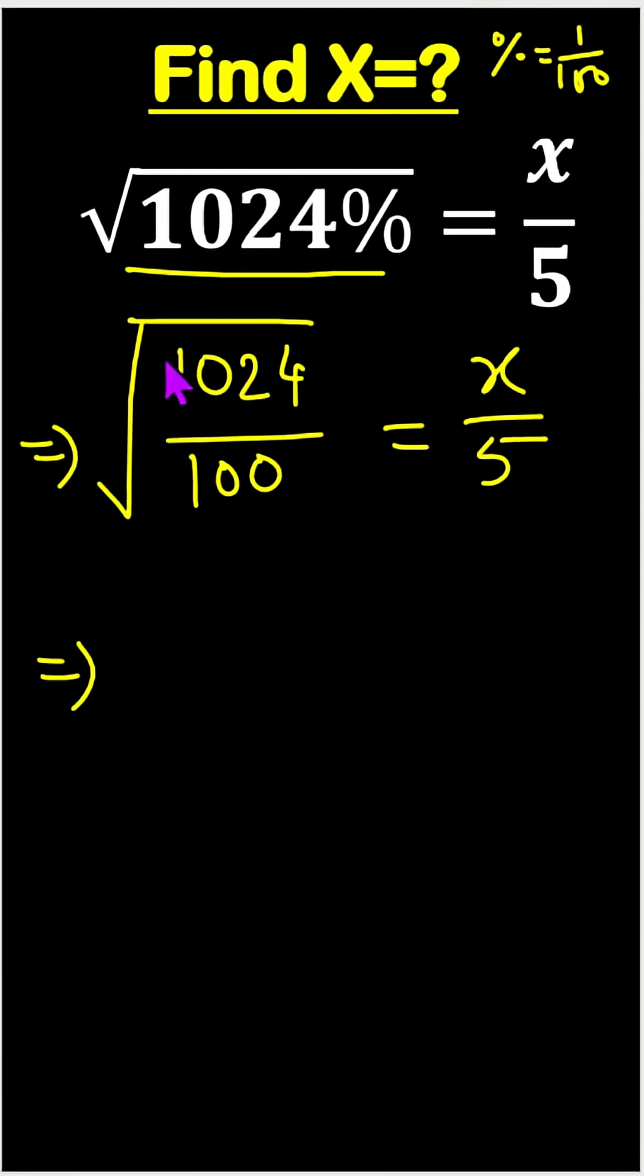First, we can divide this one, or the best way is that 1024 we can write 2 to the power 10, and this is 100, it means 10 square, and here square root equals to x by 5.